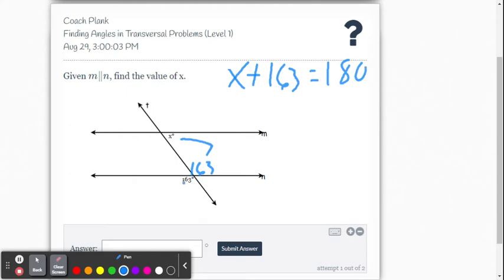Now I could have also drove this way. This corresponds here, right? So this would be 163 corresponding angles and then those form a linear pair which means they're supplementary which would have also been X plus 163 equals 180.